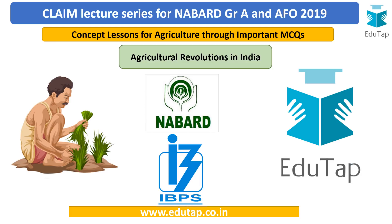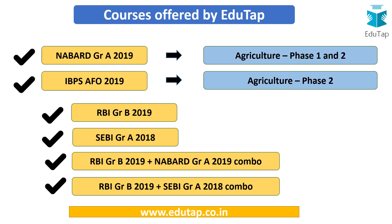Questions related to revolutions have been asked in various exams, so this is very important. We are offering NABARD Grade A course for 2019 and IBPS AFO, along with a test series for AFO and other courses including RBI, SEBI, and NABARD. Agriculture is a very important component of NABARD and IBPS AFO — in NABARD it is asked in Phase 1 and Phase 2, and in IBPS AFO in Phase 2. This lecture series addresses agriculture from both these exams.